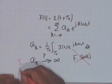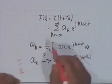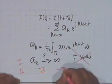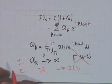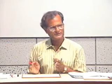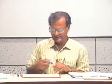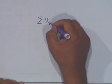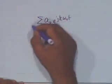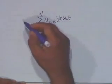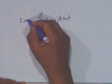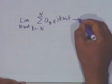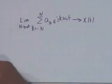A second question is: even if all the a_k's are finite, how do you know that the summation will converge to x(t)? We can start with the truncated Fourier series — the sum from k = −N to +N of a_k·e^(jkω₀t) — and increase N, allowing N to go to infinity. Even if none of the a_k's blow up, this summation may or may not converge to x(t). These are two irritating questions about the existence of Fourier series.